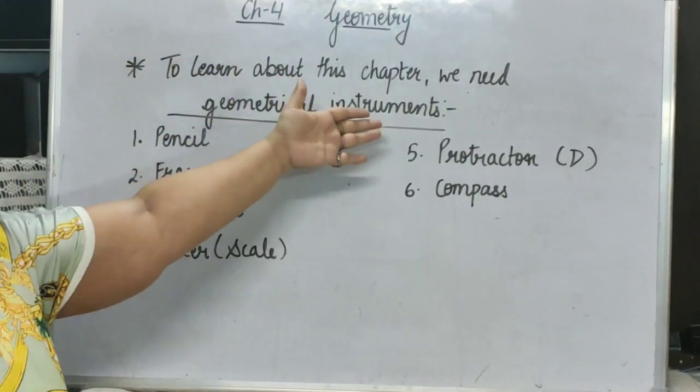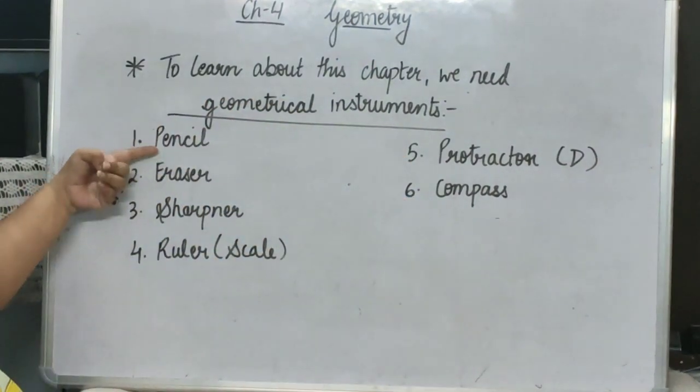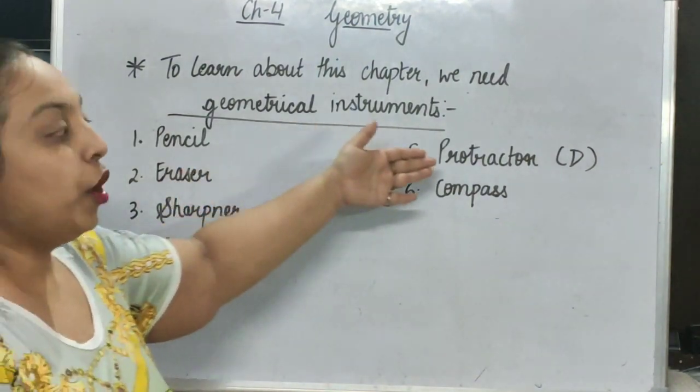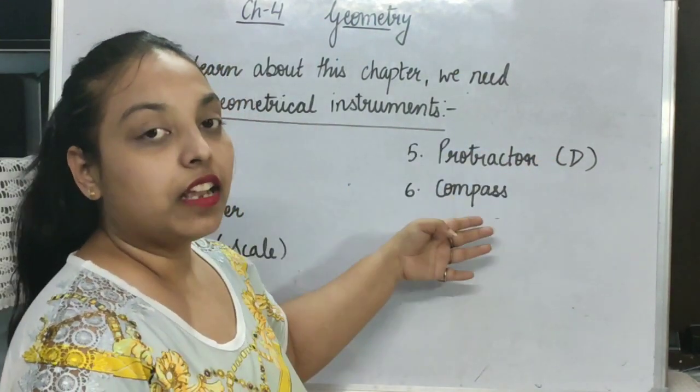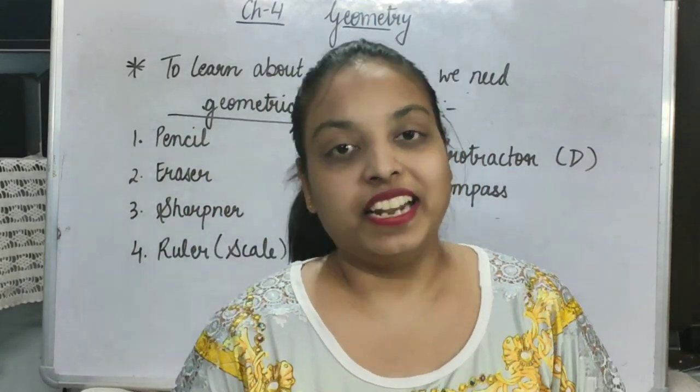To learn about this chapter, we need some geometrical instruments like Pencil, Eraser, Sharpener, Ruler, Ruler means Scale, Protractor, that is G, and Compass. So bring your geometrical instruments for learning this chapter.